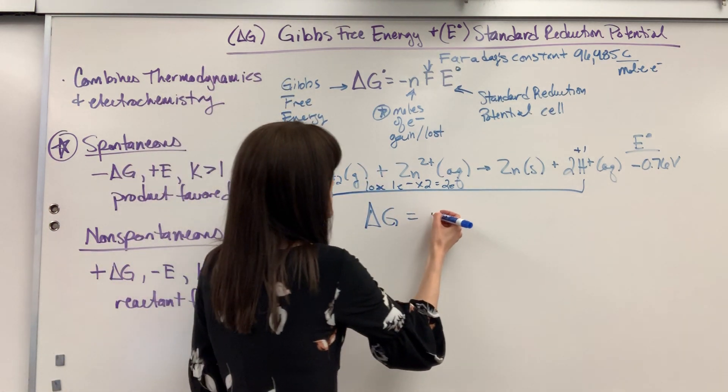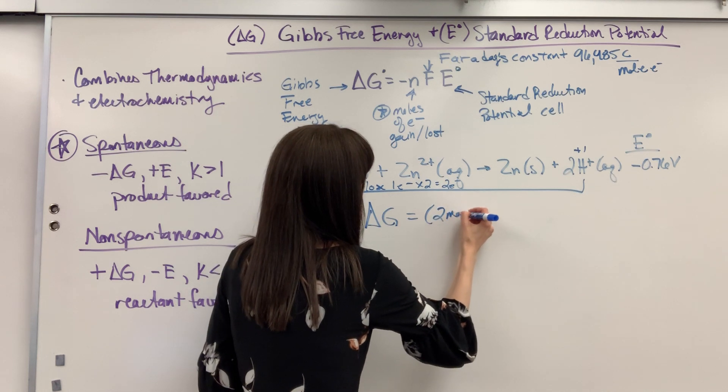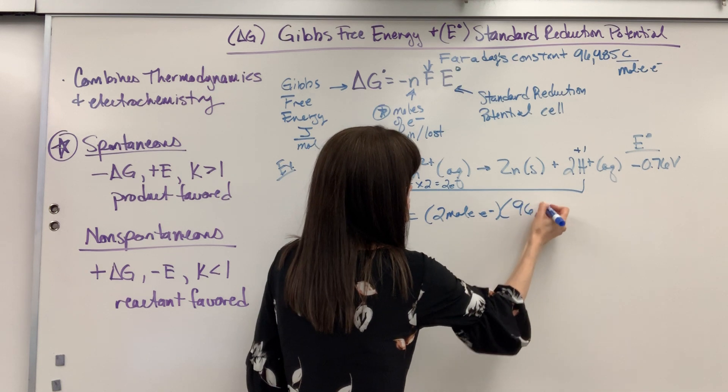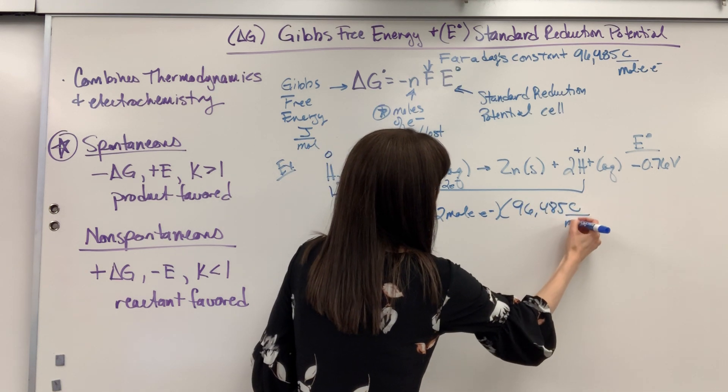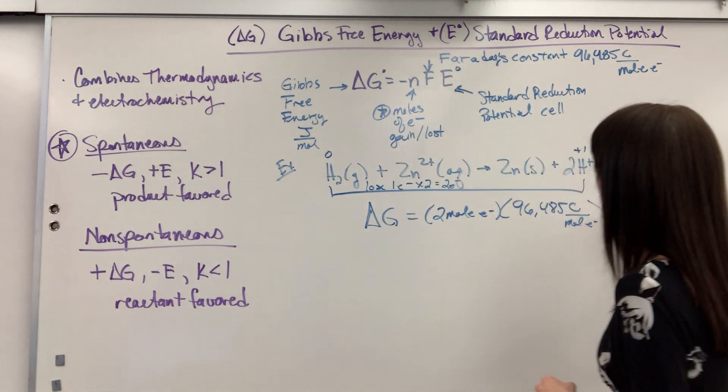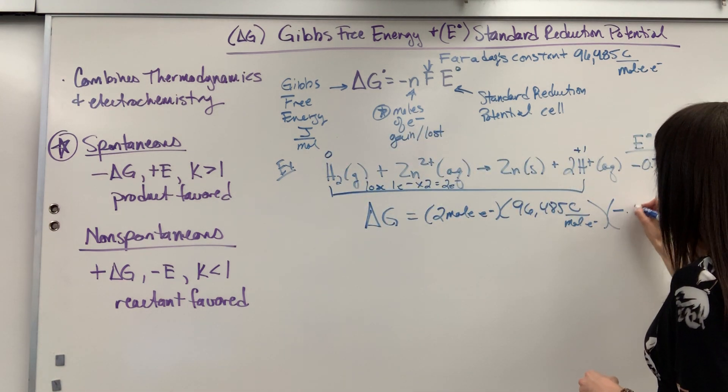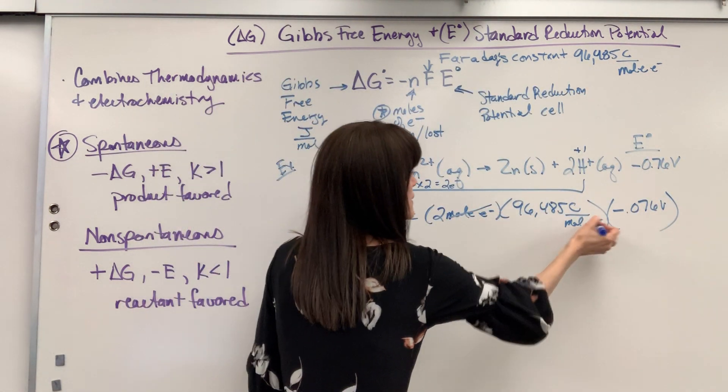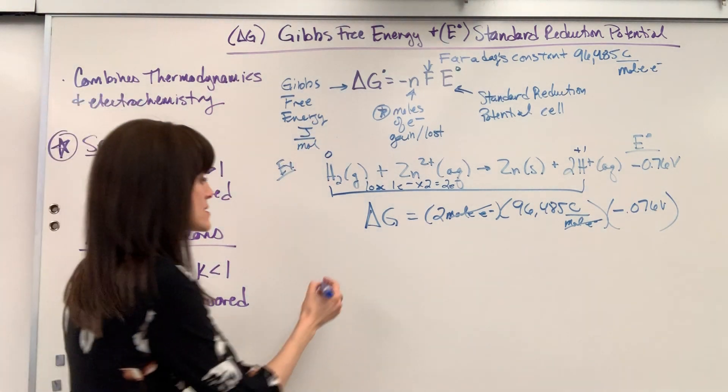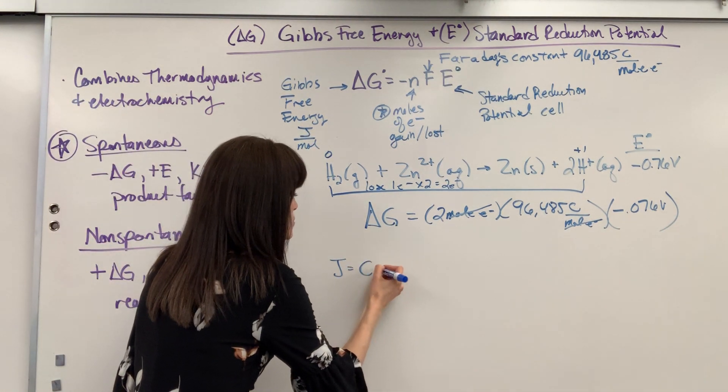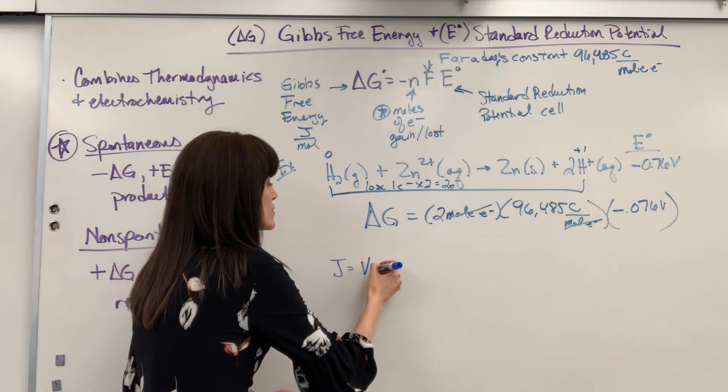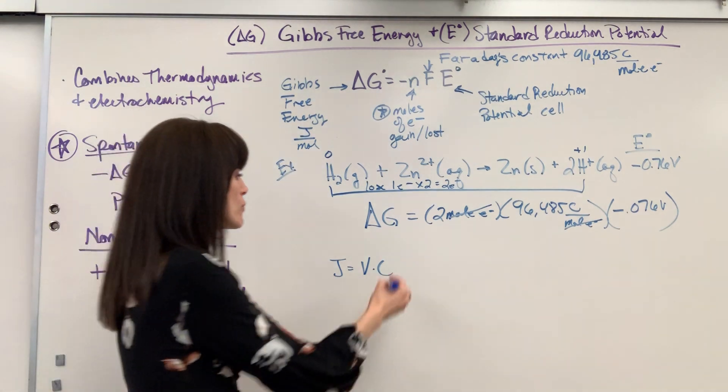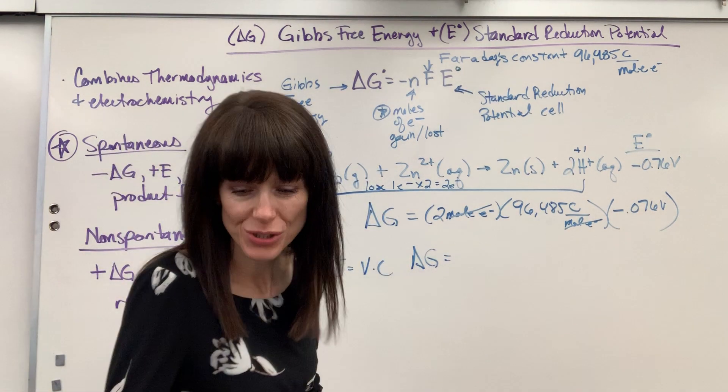N is going to be two, we're going to have two moles of electrons, then we have Faraday's constant 96,485 coulombs per mole of electron times my E naught is negative 0.76 volts. Check out units with me, mole times mole and then a volt times a coulomb equals joule.